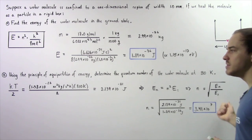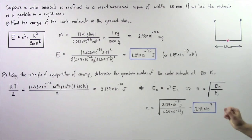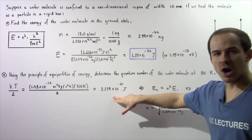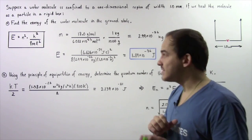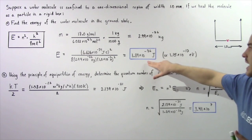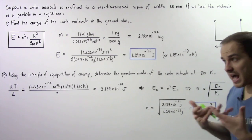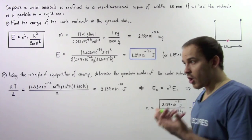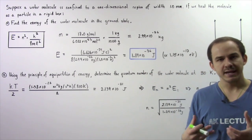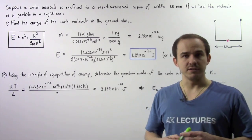This is the quantum number of our water molecule with the thermal energy we calculated, where the lowest possible energy at N equals 1 is the ground state energy from part A. We see that the concept of the particle in a rigid box can be very useful in making calculations at the subatomic and atomic levels.